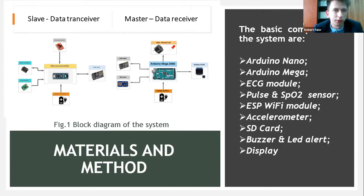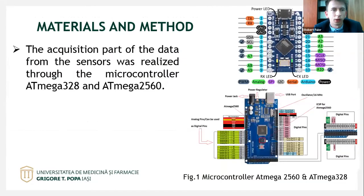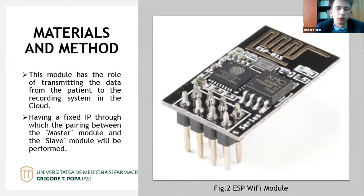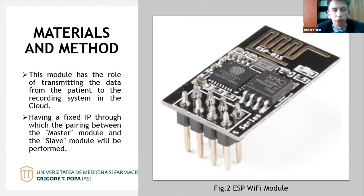The block diagram of the system: a slave data transmitter and a master data receiver is the function. The acquisition of data from the sensor was related to the microcontroller Arduino Mega. A fixed IP pairing between the master module and the slave module will be performed.